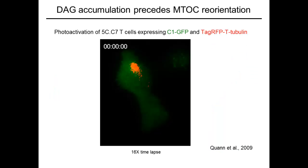In this manner, we discovered that MTOC reorientation in T-cells is guided by an intracellular gradient of diacylglycerol, or DAG, centered at the synapse. In this experiment, we are watching both the MTOC labeled with RFP tubulin and DAG visualized using a GFP biosensor that contains the C1 domains of protein kinase C-theta, or PKC-theta.